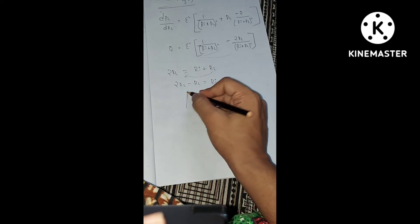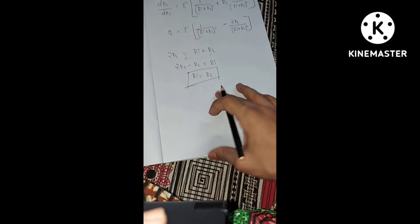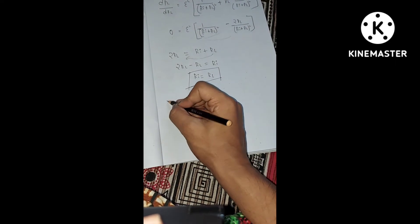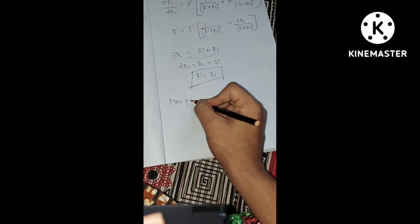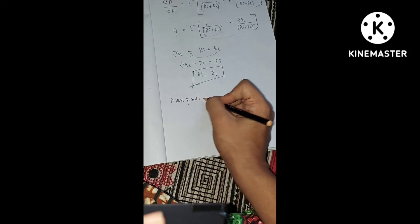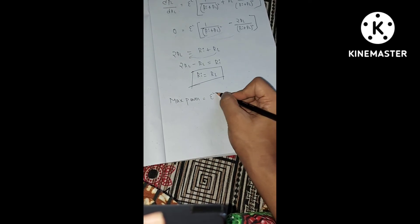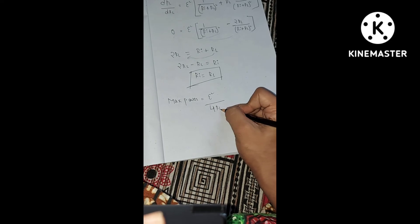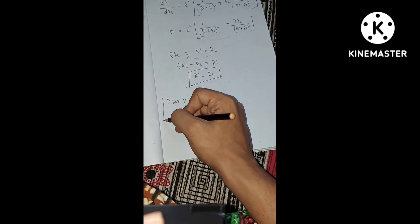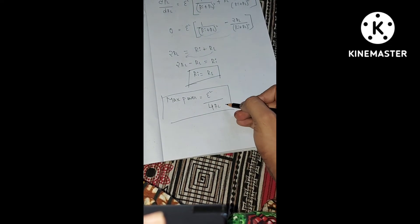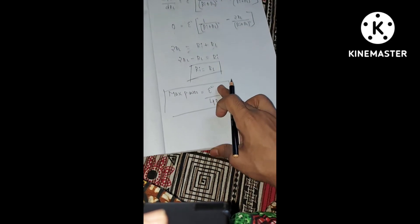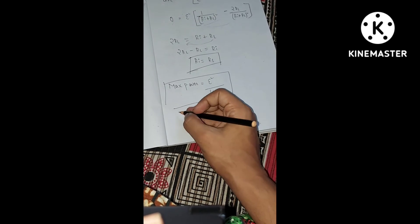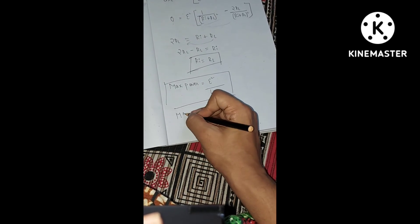So the condition for the maximum power theorem is satisfied when RI = RL. For maximum power, the formula is: Pmax = E² / (4RL).